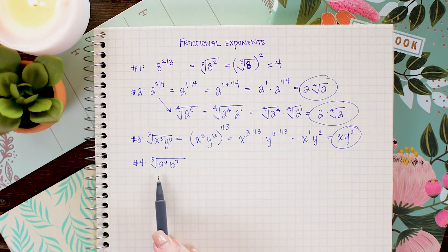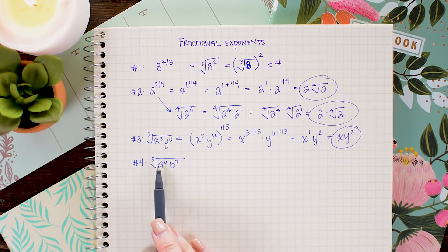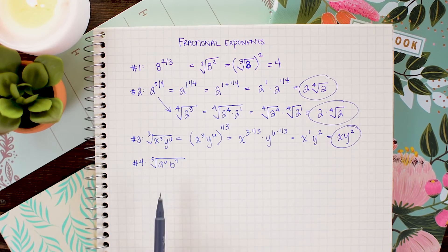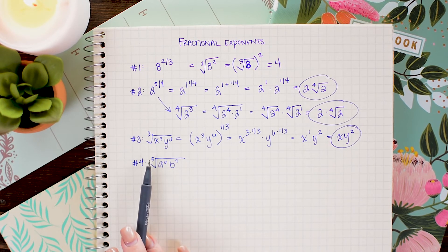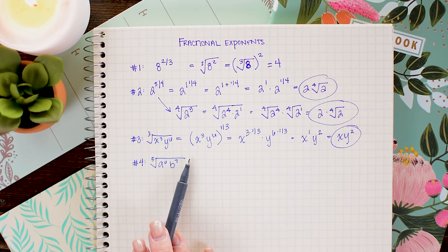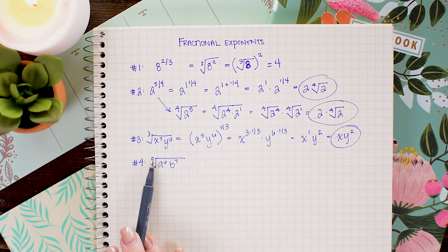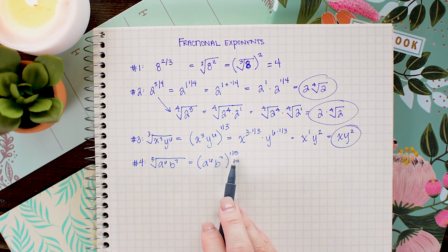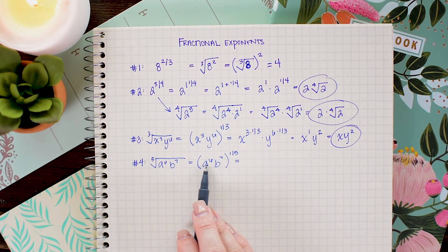In this one we have a fifth root and we have some powers that are going to be a little trickier to work with. So this is just a slightly more difficult problem than the last one. Again I'm going to start the same way and replace this fifth root with a 1 fifth power this time since I want the index of the root to be 5. Once again I'm going to multiply the 1 fifth with the powers on a and b.